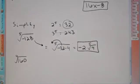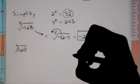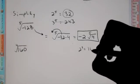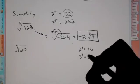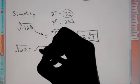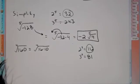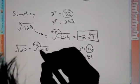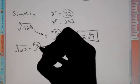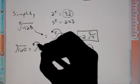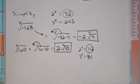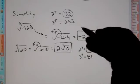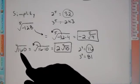Now let's try the 4th root of 160. Let's try some 4th powers: 2 to the 4th is 2, 4, 8, 16. 3 to the 4th is 81. 16 is a factor of 160, so we can break this up as 16 times 10. We can take the 4th root of 16 — what to the 4th power is 16? The answer is 2. It doesn't become a 4; we're asking what to the 4th power is 16, and the answer is 2, leaving us with 2 times the 4th root of 10 as our final answer.